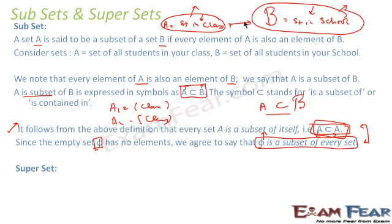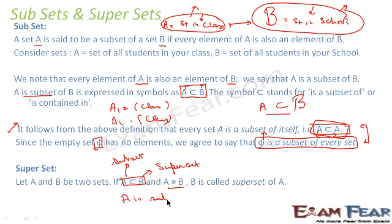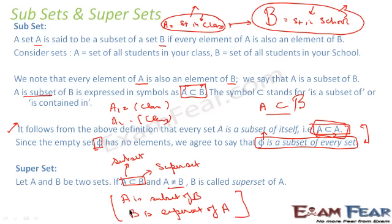Now comes the concept of superset. A is the set of all students in the class and B is the set of all students in the school — here B is the superset. The bigger one is called the superset and the smaller one is called the subset, where A is not equal to B. So we can say A is a subset of B, or equivalently, B is a superset of A — both are true.